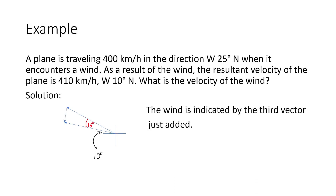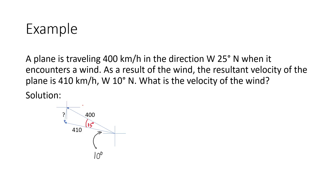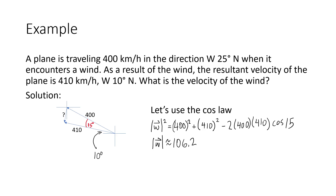We need to determine the magnitude and direction of that third vector. It's good to put a north-south-east-west grid marker at the tail of that vector — the one we're looking for. The first thing we're going to do is determine its magnitude. We're just going to use the cosine law because we have side-angle-side within that triangle of vectors. Using the cosine law, we get that the magnitude of that component wind vector is roughly 106.2.